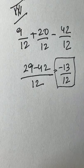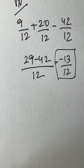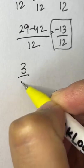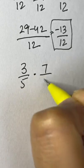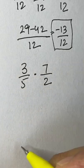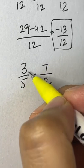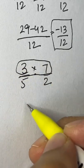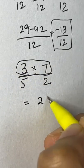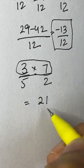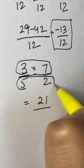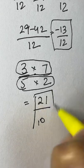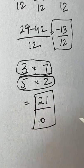For multiplication of fractions, for example 3/5 times 7/2, just multiply the numerators and multiply the denominators. 3 times 7 is 21, and 5 times 2 is 10. The answer is 21 over 10.